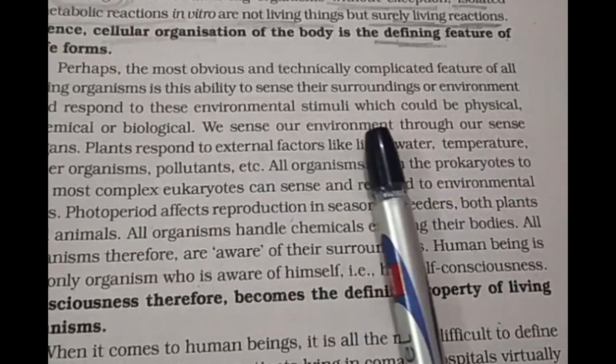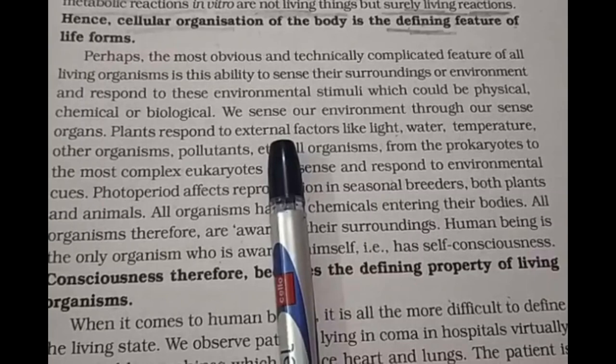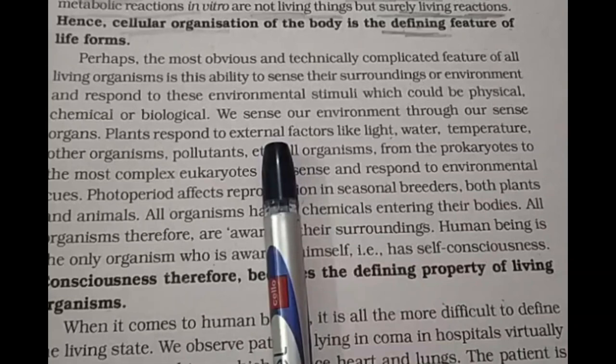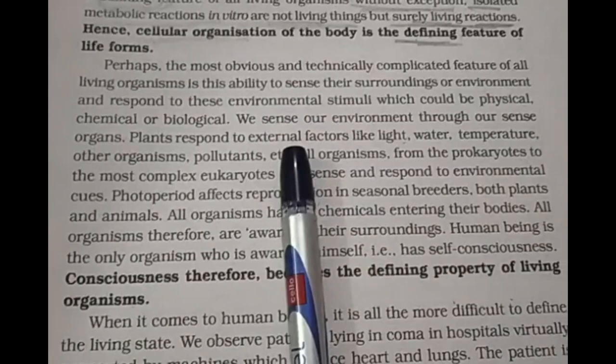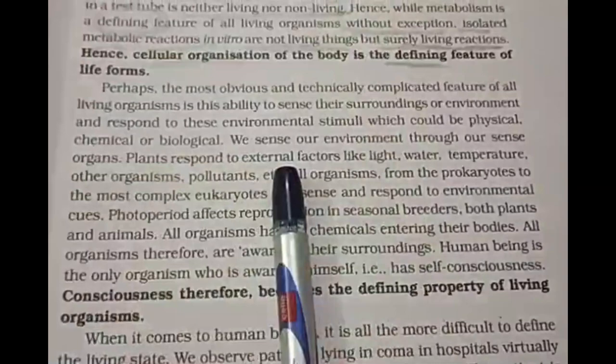We sense our environment through our sense organs, and we respond to stimuli. Plants also respond to external factors like light, water, temperature, other organisms, and pollutants. We have five sense organs through which we sense things and respond against stimuli. Plants also respond to physical external factors.